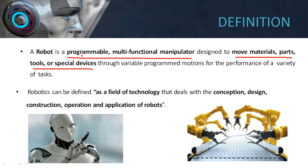It is a multifunctional manipulator — it can do many functions. The robot can hold the workpiece, move the workpiece from one part to another, and do many functions. It is designed to move materials, parts, tools, or special devices through variable programmed motions. The motions of the robot are programmed, which is why we call them variable programmed motions.